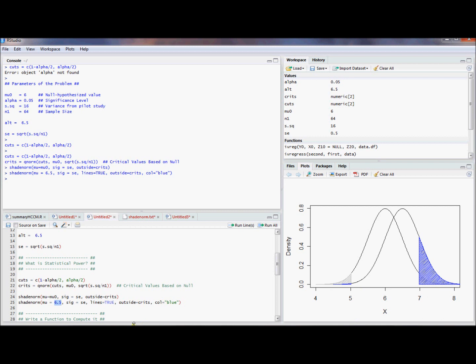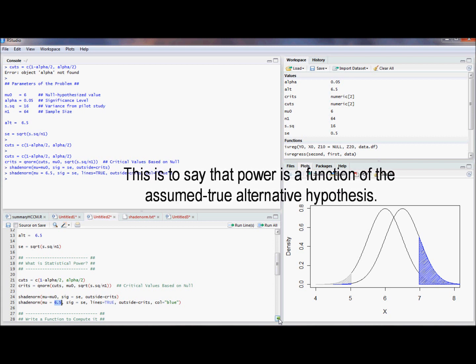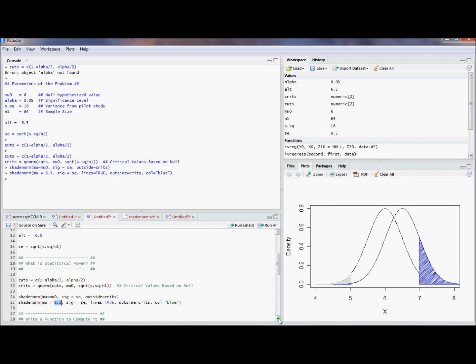For example, we could have computed it for 7, 8, 9, 10 if we wanted to, and we could get a value for the power for each of those calculations. When someone wants to know what does the power of my test look like? What they really want to know is how does the probability I reject depend on how far away from the null hypothesis I am? In particular, they want that probability that they reject to be sufficiently high for a small enough deviation, for a deviation from the null hypothesis that they care about.